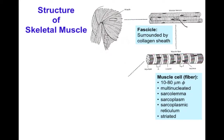Muscle cells are also called muscle fibers — technically a muscle fiber or myofiber is a muscle cell. Cardiac muscle cells are not very fibrous; they're fairly short and rod-shaped, but we still call them fibers because terminology for cardiac muscle derives from skeletal muscle. Skeletal muscle fibers are 10 to 80 micrometers in diameter and can be over half or even three-quarters the length of the muscle. As a result, they're really large cells and so they're multi-nucleated.